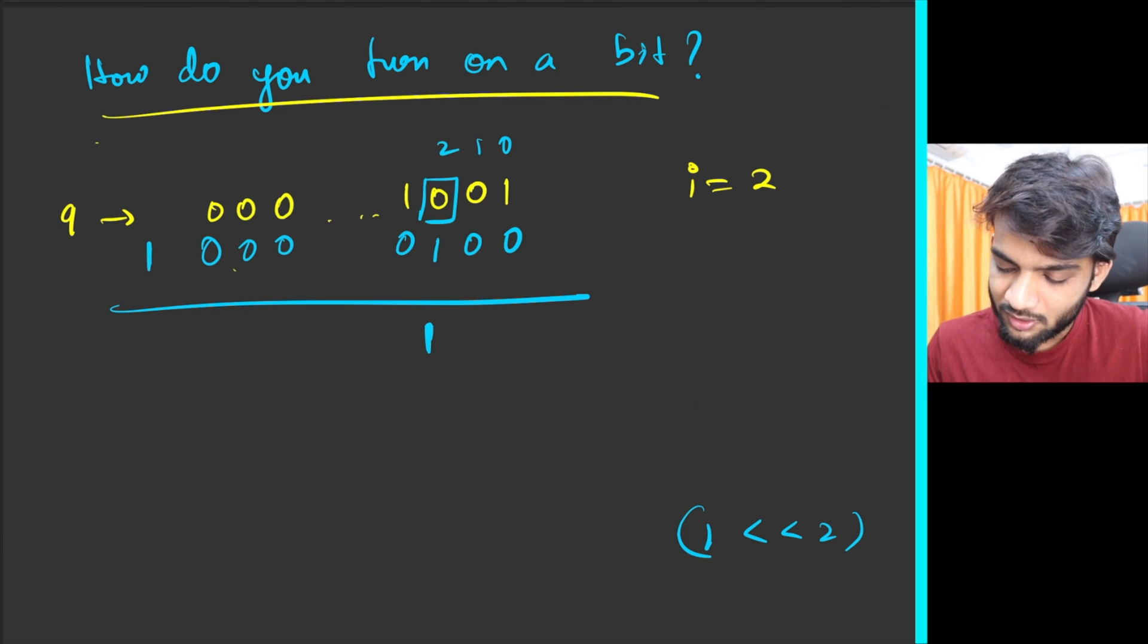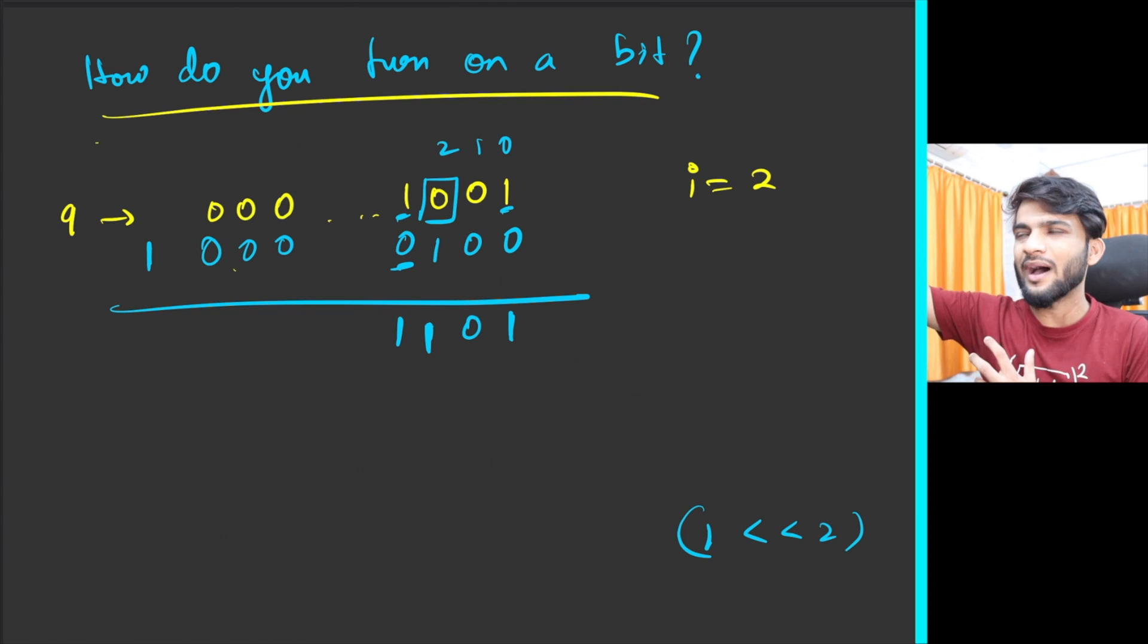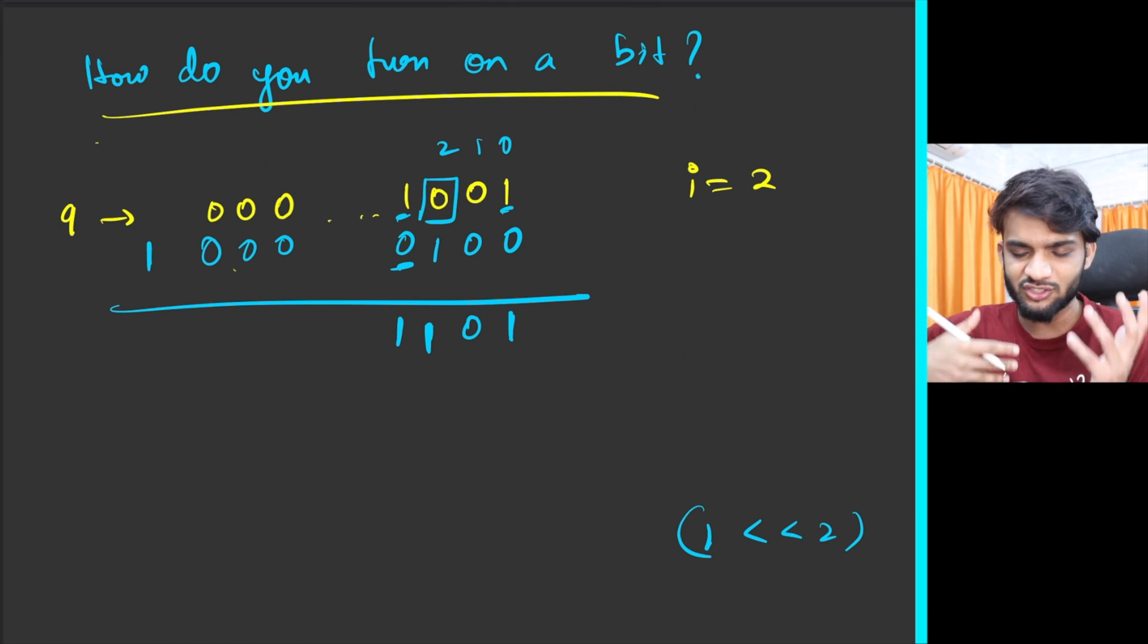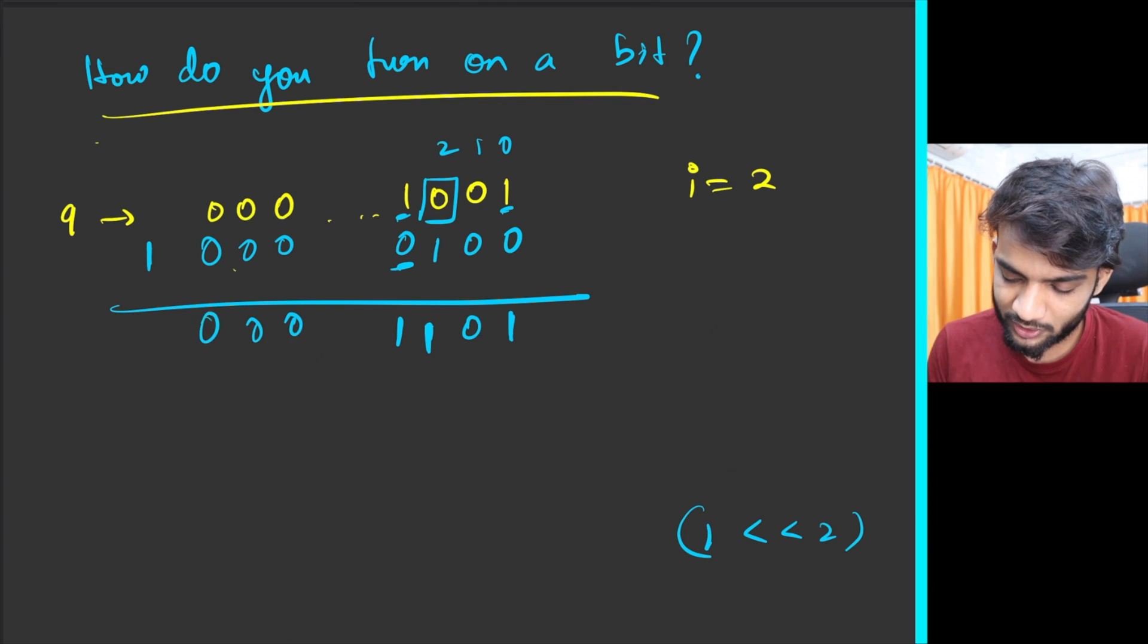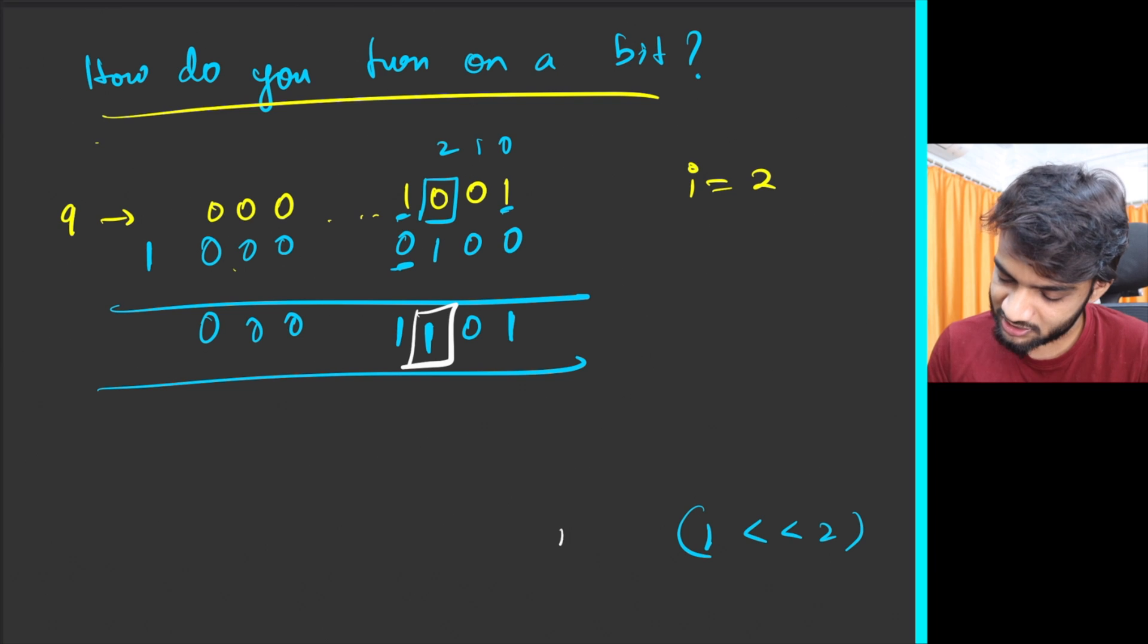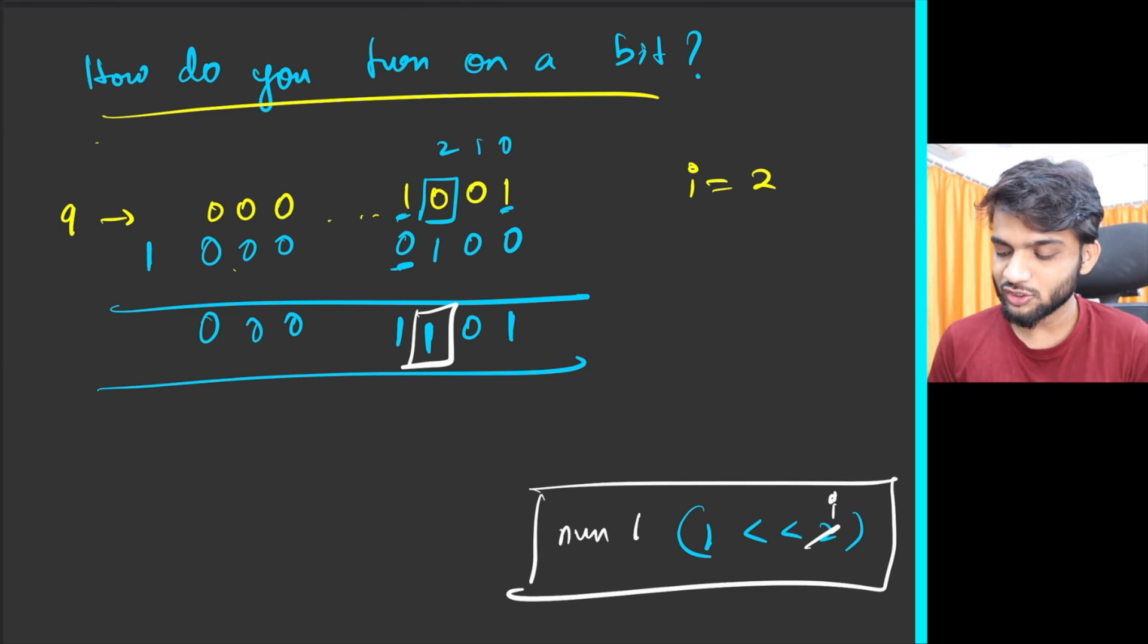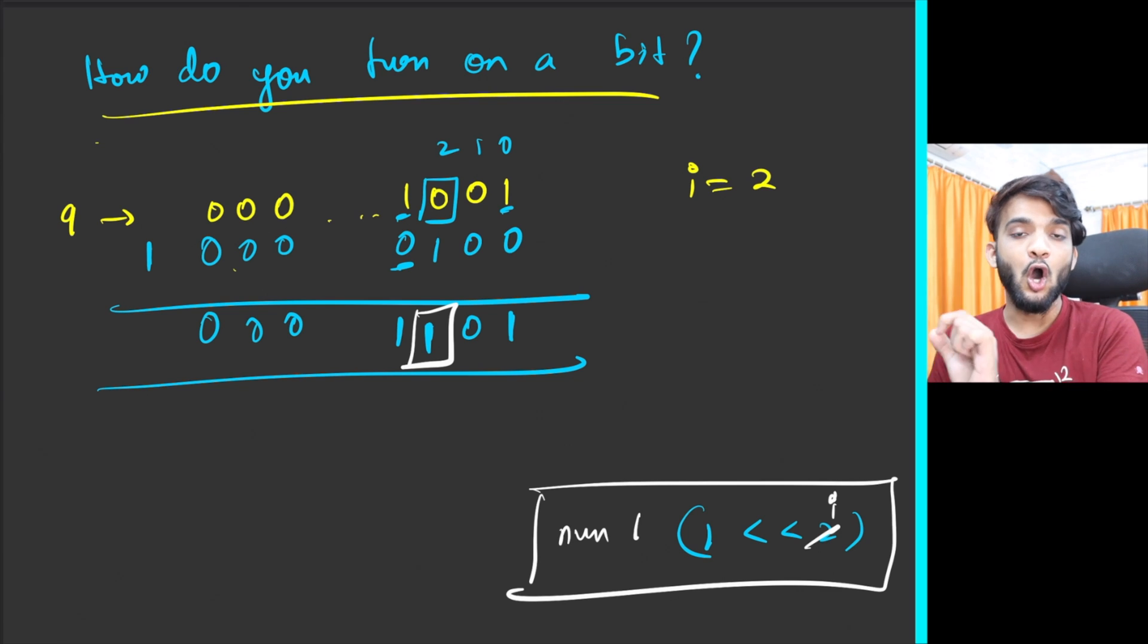If it has left shifted by two positions, it will look something like this. Now if you do an OR, how do you make sure this guy is one? Using the OR operator. This guy will be one and rest will just replicate whatever is over here. If it's a one above, it will replicate one. If it's a zero, it will replicate zero. You can easily turn on the required bit. What you need to do is number OR one left shift of i. This will turn on the i-eth index bit.